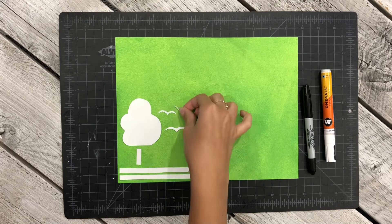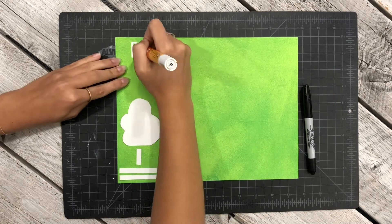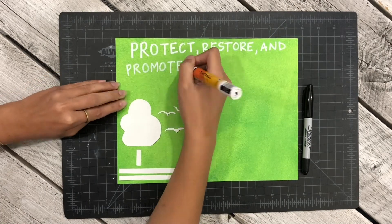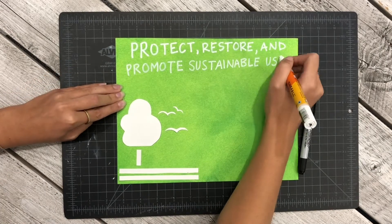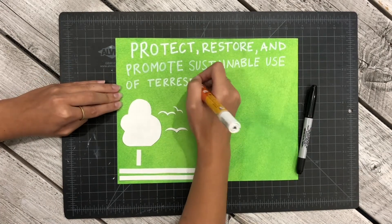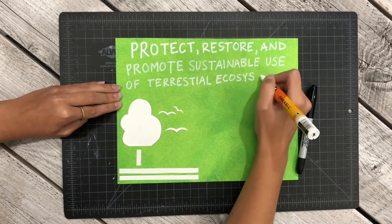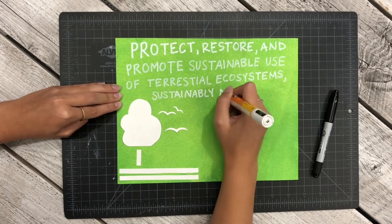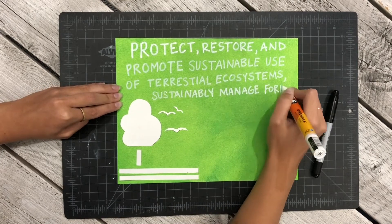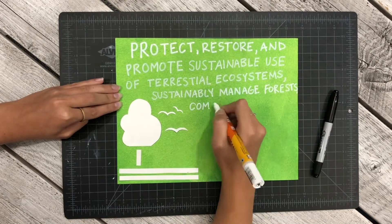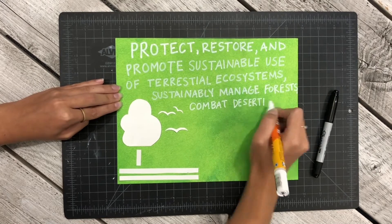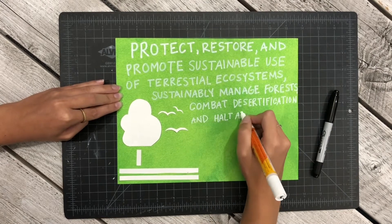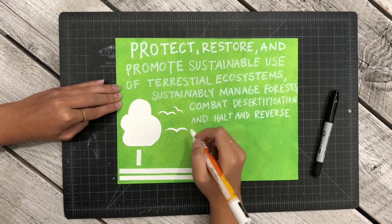Sustainable Development Goal 15 works to protect, restore, and promote sustainable use of terrestrial ecosystems, sustainably manage forests, combat desertification, and halt and reverse land degradation and halt biodiversity loss.